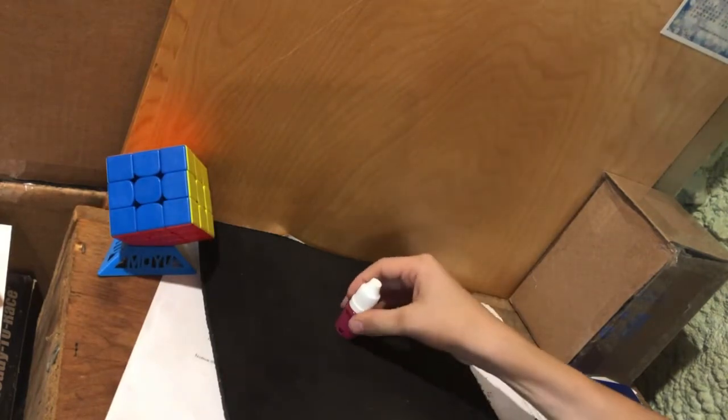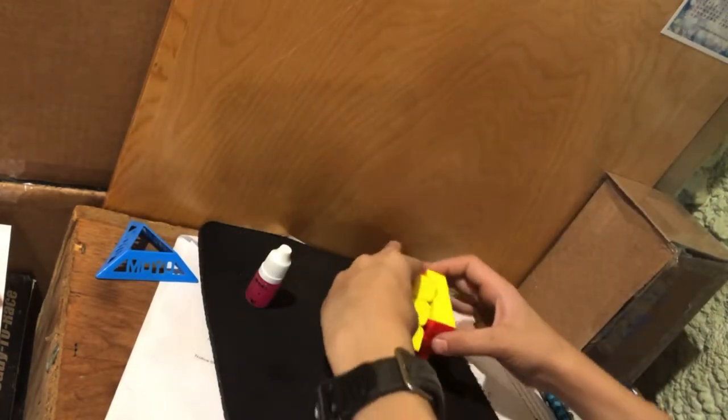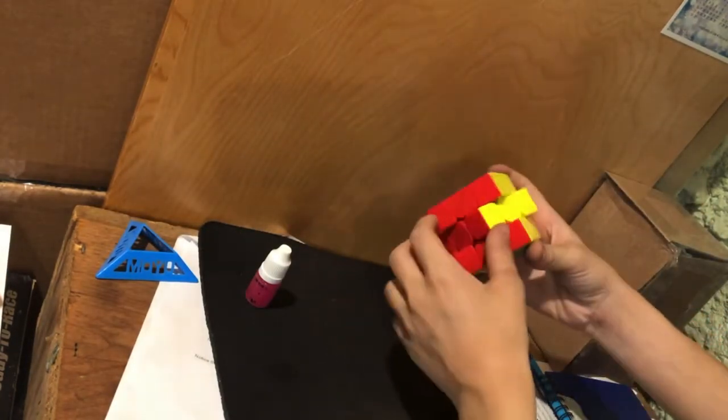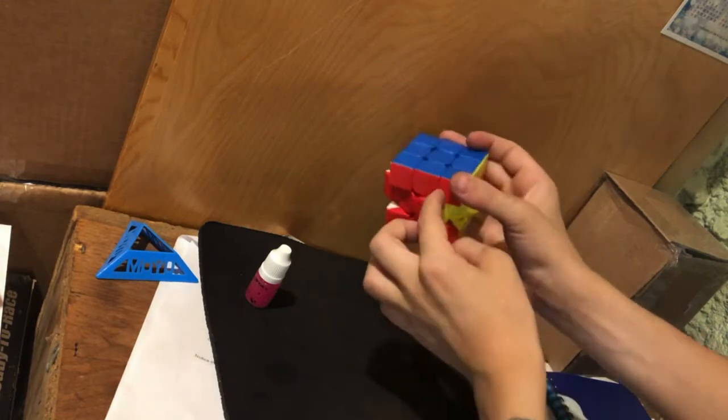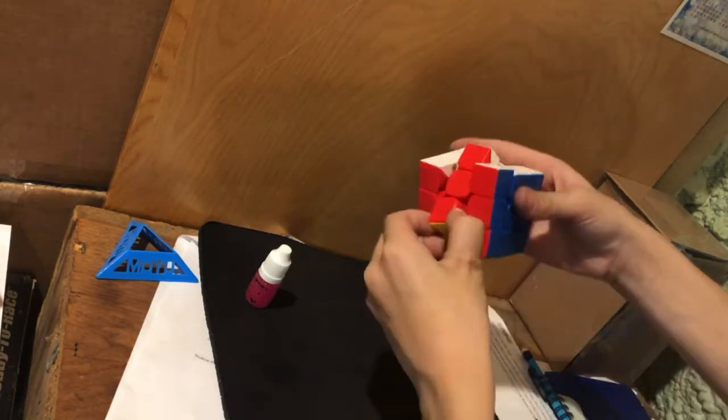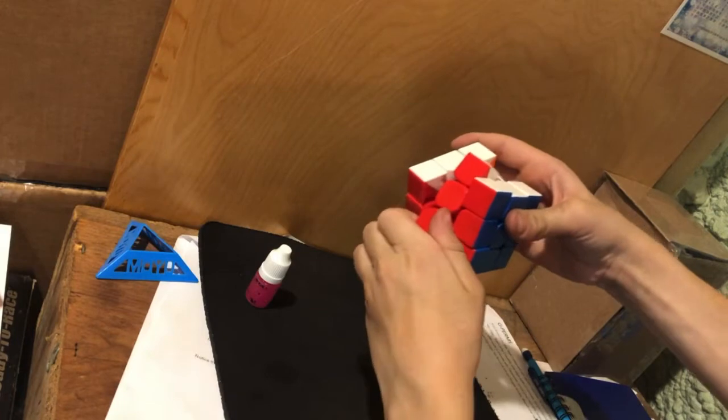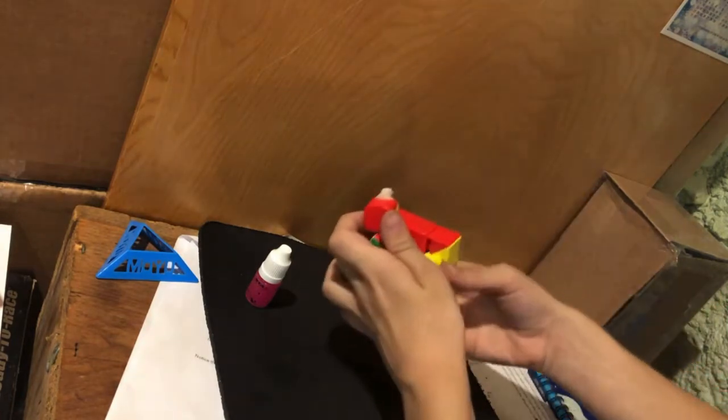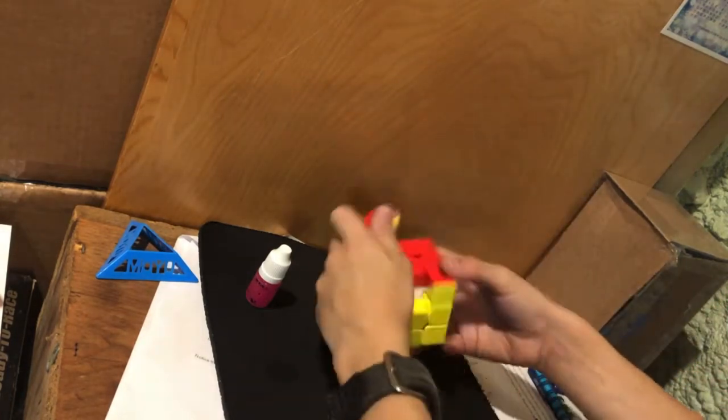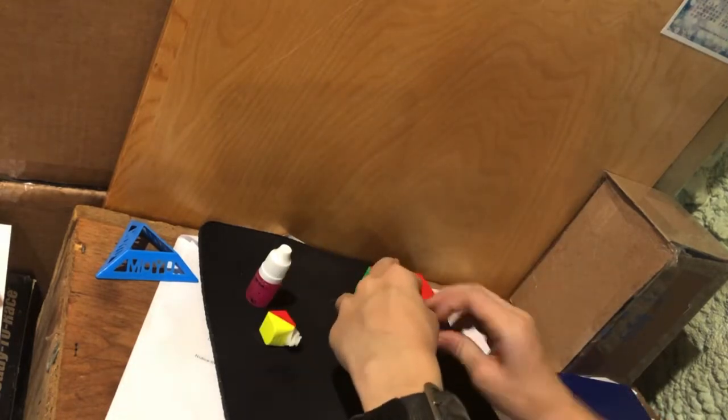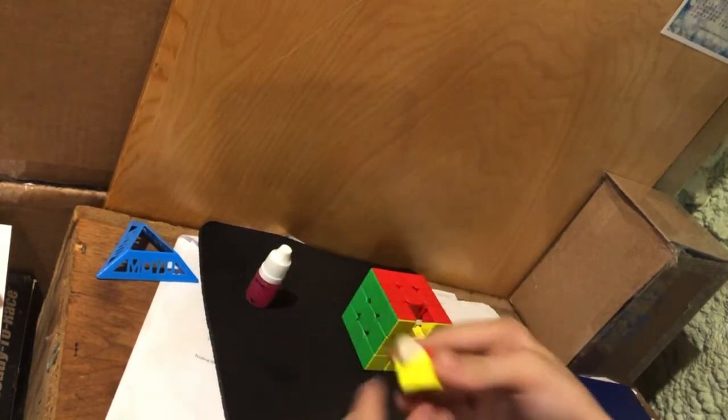The first step is to take your cube apart by taking the middle layer, moving it down a little bit so it's on this line, then twisting the corner like your edge. Then it will pop out and everything can come out smoothly.